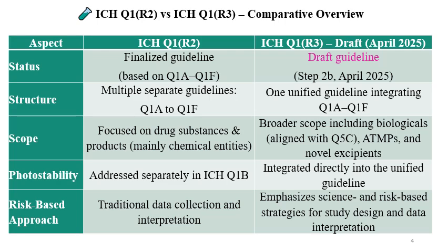Now let's see the differences between ICH Q1R2 and the updated draft guideline ICH Q1R3. The status of Q1R2 is a finalized guideline based on Q1A to Q1F, while Q1R3 is currently a draft guideline. Q1R2 had multiple separate guidelines, whereas the Q1R3 draft is one unified guideline integrating Q1A to Q1F. The scope of Q1R2 focused mainly on drug substances and products as chemical entities.